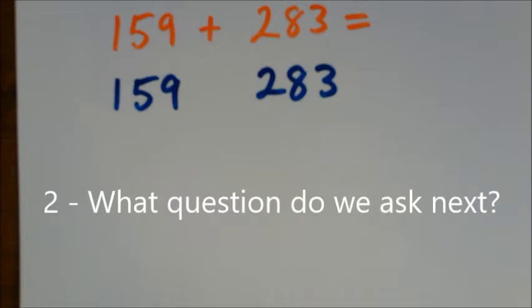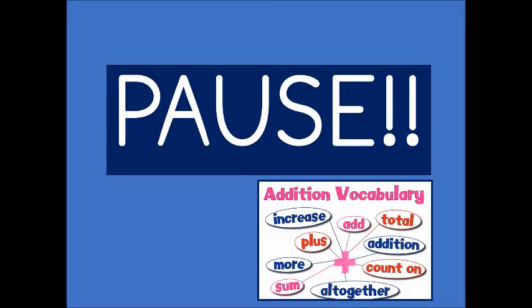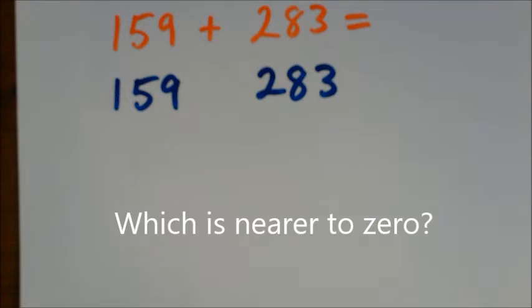How do we work that out? What's the next question that we ask ourselves? Looking at that nine and looking at that three, what's the important question to ask here? Yes, it's which of those two digits is nearest to zero.